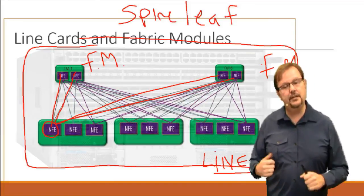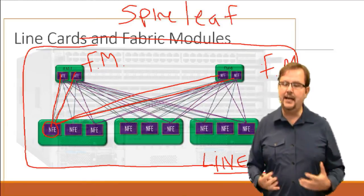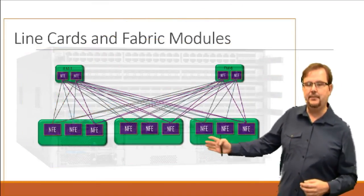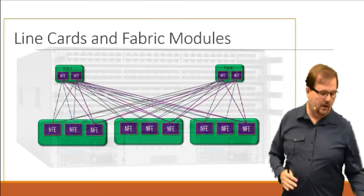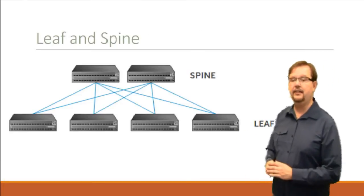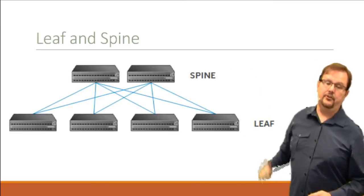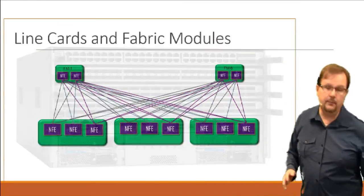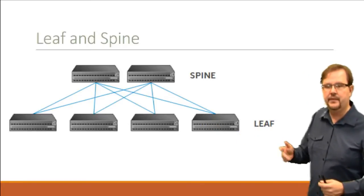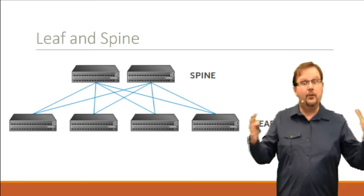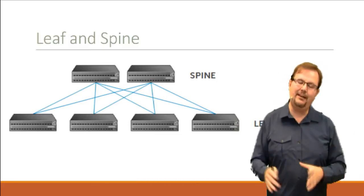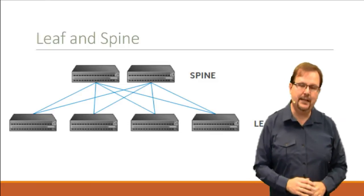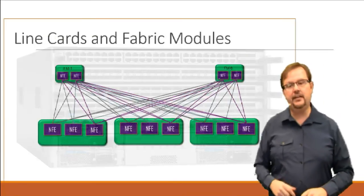You simply plug the fabric modules in and the line cards in — you just haven't thought about it as spine and leaf. The analogy holds for scaling: if you need more bandwidth between line cards, you add more fabric modules. Similarly, if you need more bandwidth in a spine and leaf topology between the leaves, you add more spine switches. If you need more access ports, you add more line cards in a chassis; in spine and leaf, you add more leaves. ACI is kind of like we've exploded a switch into its components, broken out into line cards and fabric modules, spine and leaf, and ACI kind of behaves as one big switch.